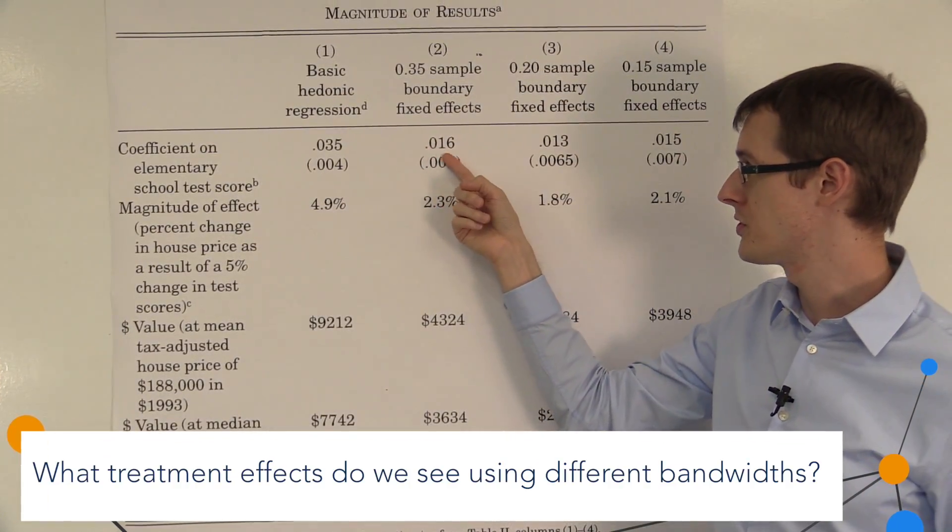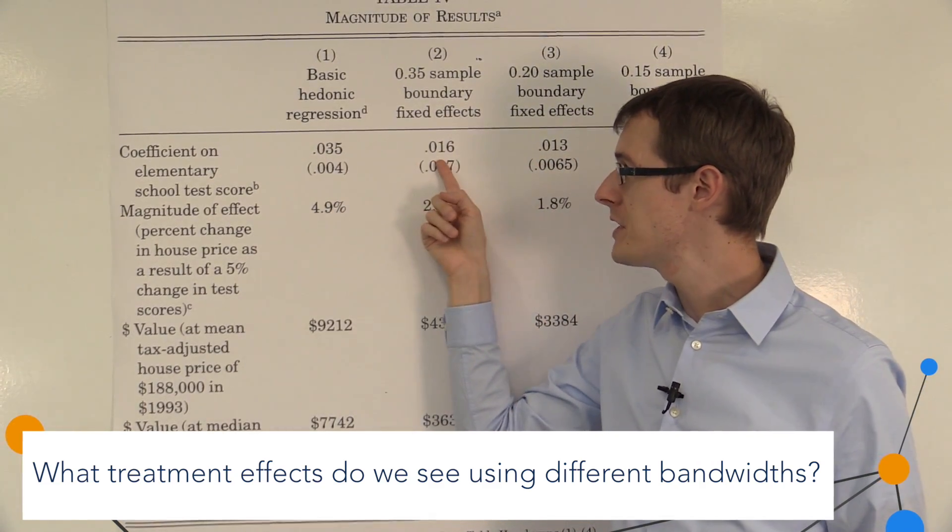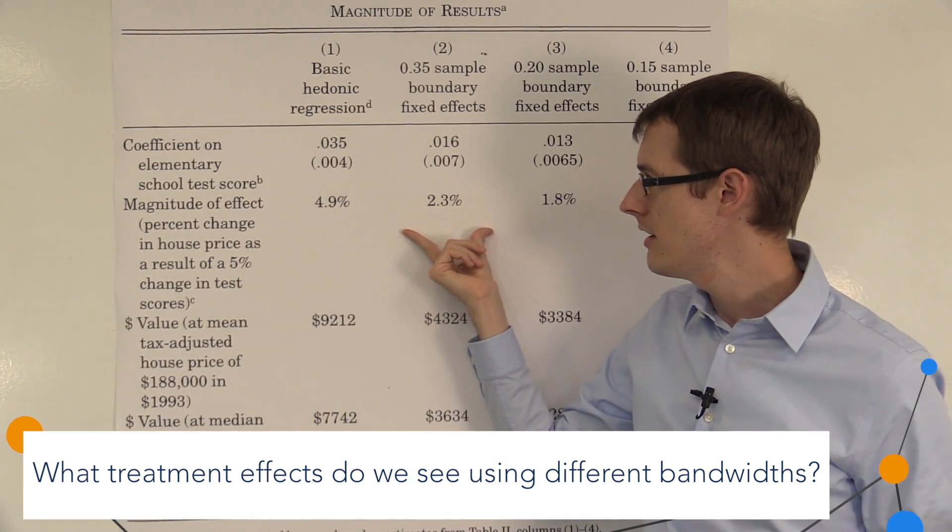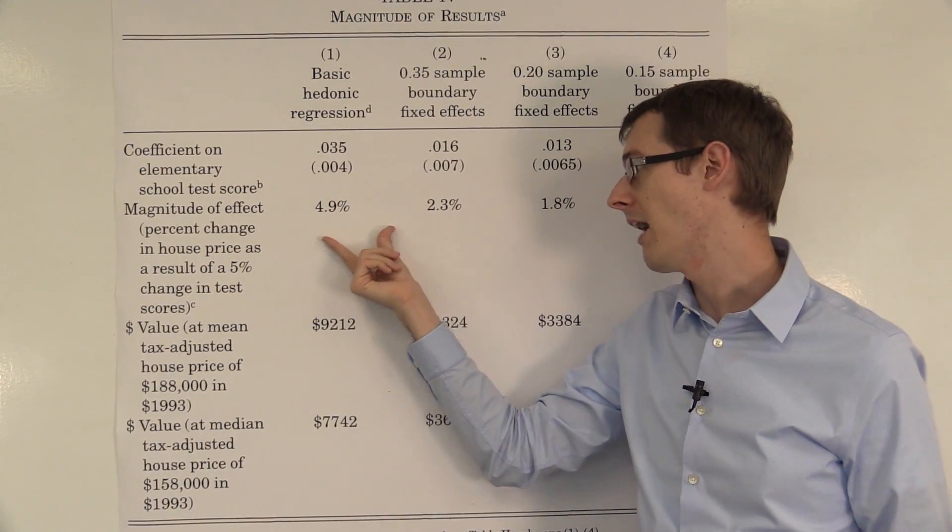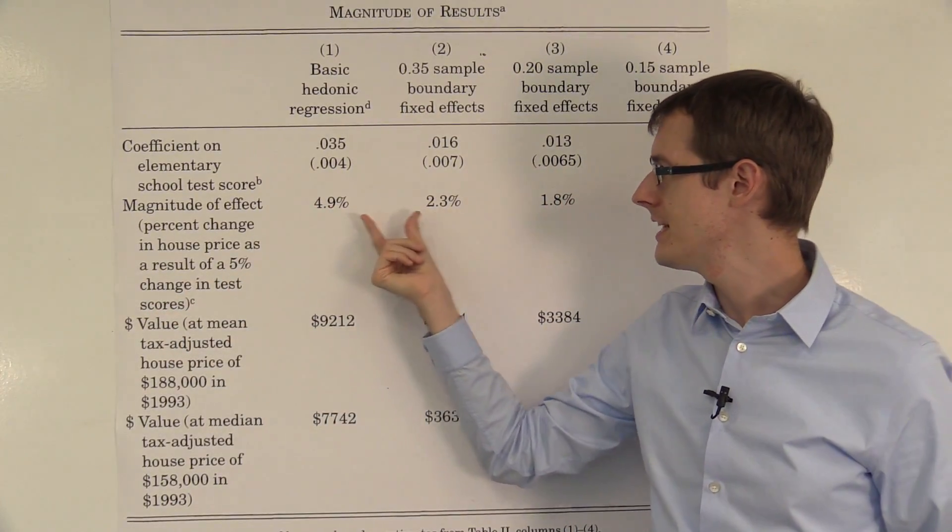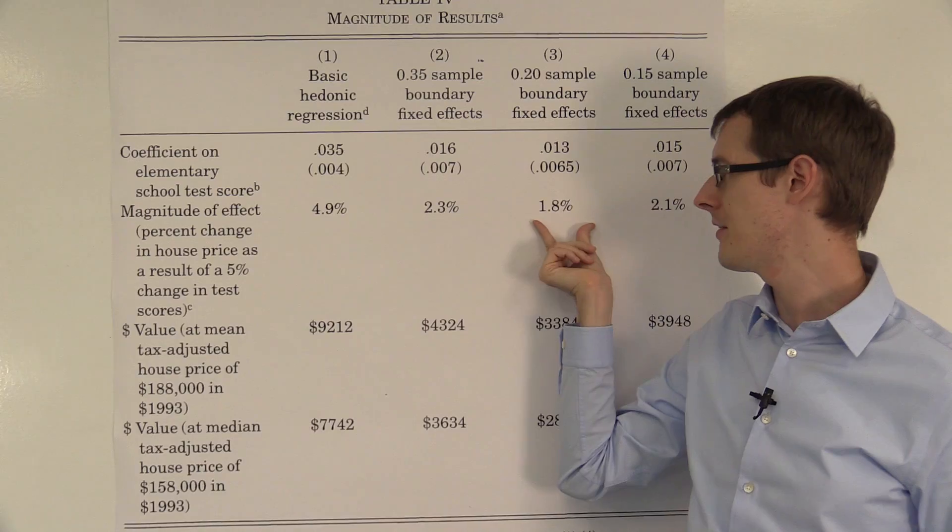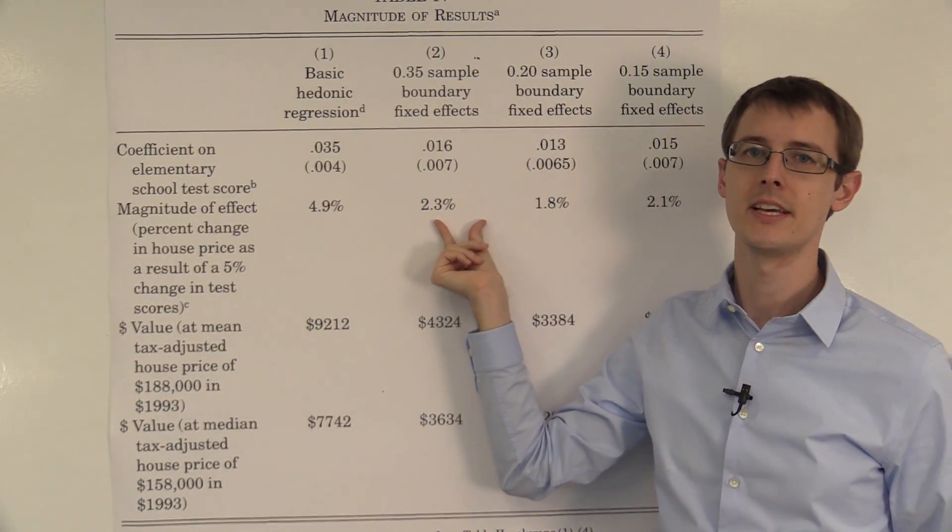And we get .016, .013, .015. So here, the coefficients are about half, and the interpretation also cuts down by about half. And if we increase test scores by 5%, then instead of getting a 5% increase in house price, we only get something around a 2% increase in house price.